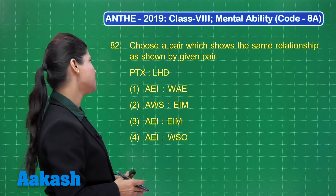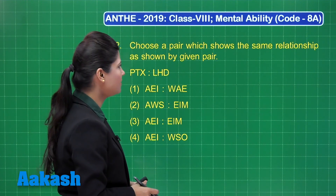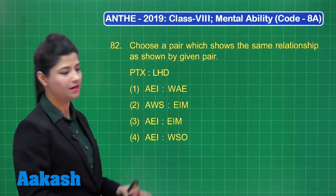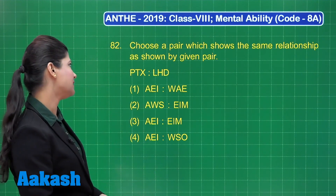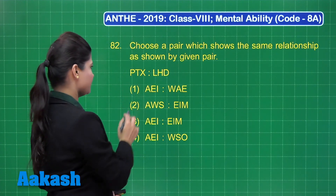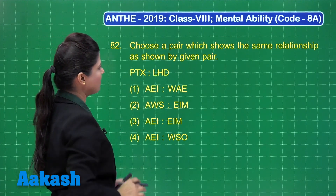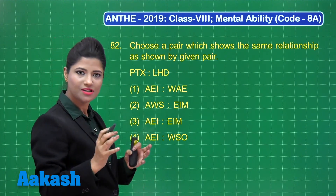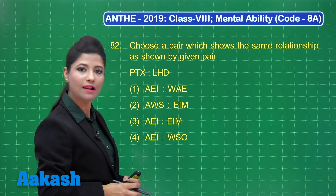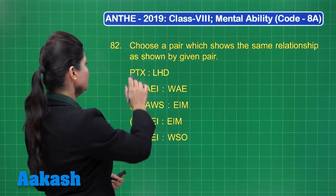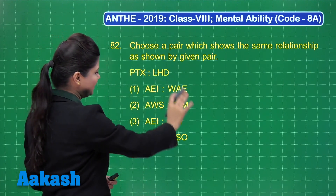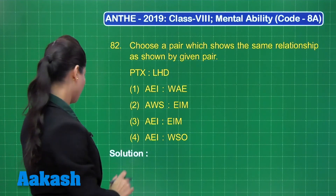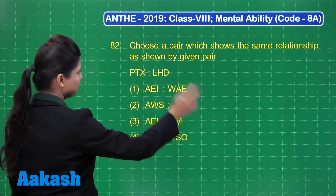Let us take up the next question, which states: choose a pair which shows the same relationship as shown by the given pair. We have the given pair containing three letters PTX, and it is paired with LHD. There is a relationship between these two sets of alphabets, and you need to find the same relationship among the options. This is a question related to analogy.